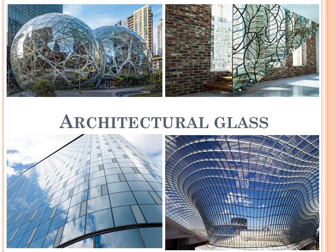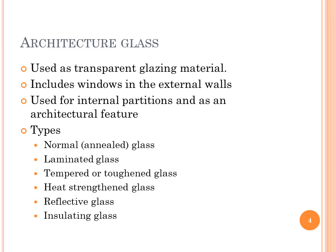Architectural glass is used as a transparent glazing material. It includes windows in the external walls. It is also used for internal partitions and as an architectural feature. The different types of architectural glass are normal or annealed glass, laminated glass, tempered or toughened glass, heat strengthened glass, reflective glass, and insulating glass.